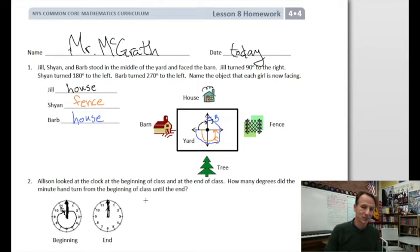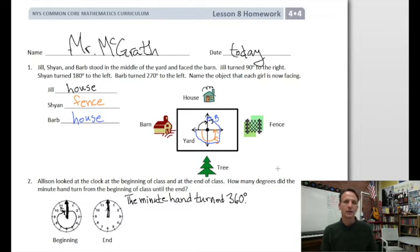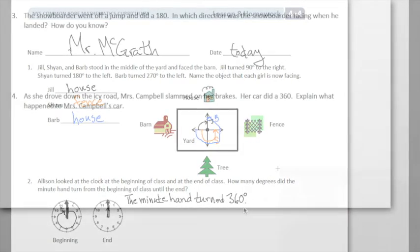That's how many degrees are in a circle, four quarter turns: 90, 180, 270, 360. So we'll write a statement here. The minute hand turned 360 degrees.